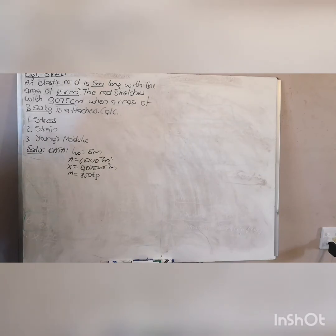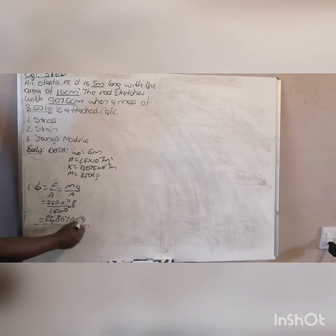First, calculate the stress. Stress is force over area. You don't have a force but you are given your mass. Your mass is equal to mg, which means your stress would be mg over the area. So it will be 350 times 9.8 over your area which is 1.5 times 10 exponent negative 4. Your stress is 22,867 mega pascals - that is your stress.